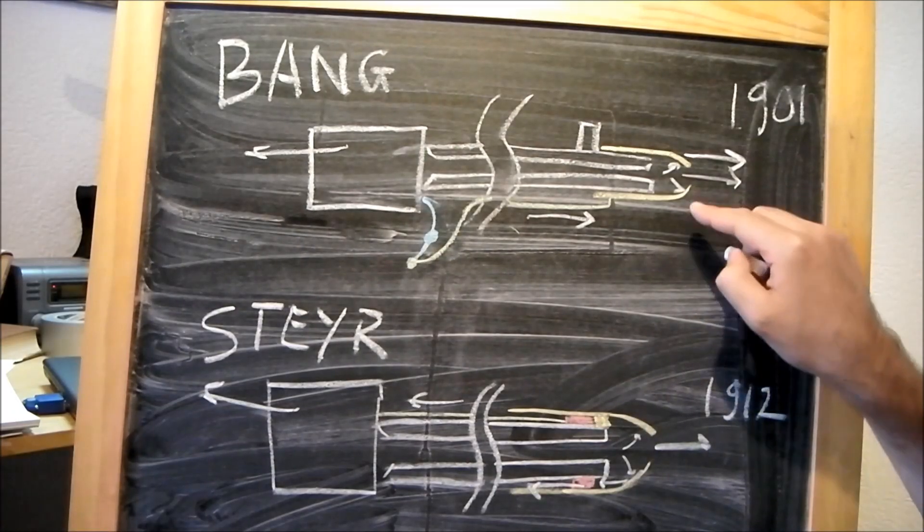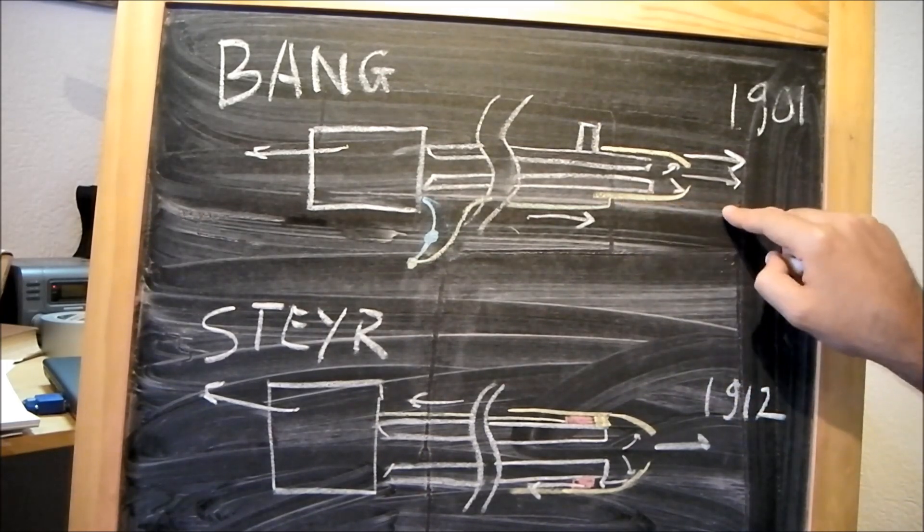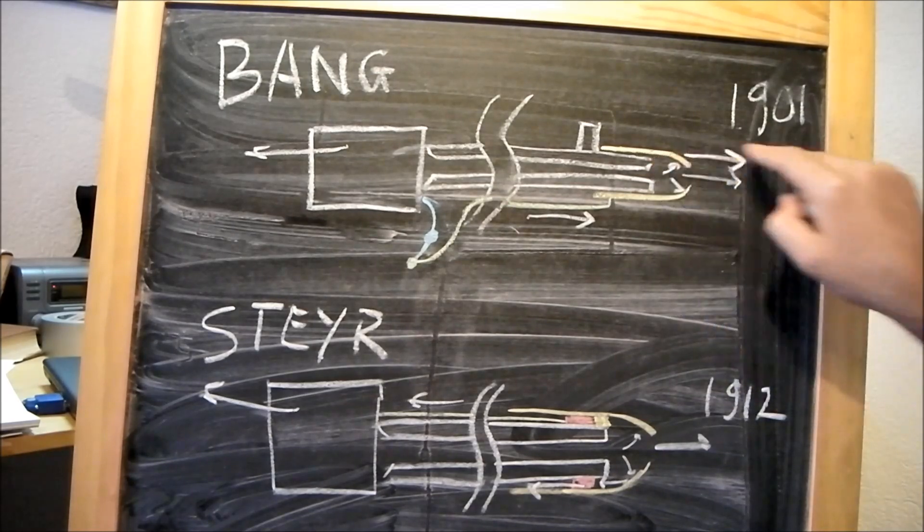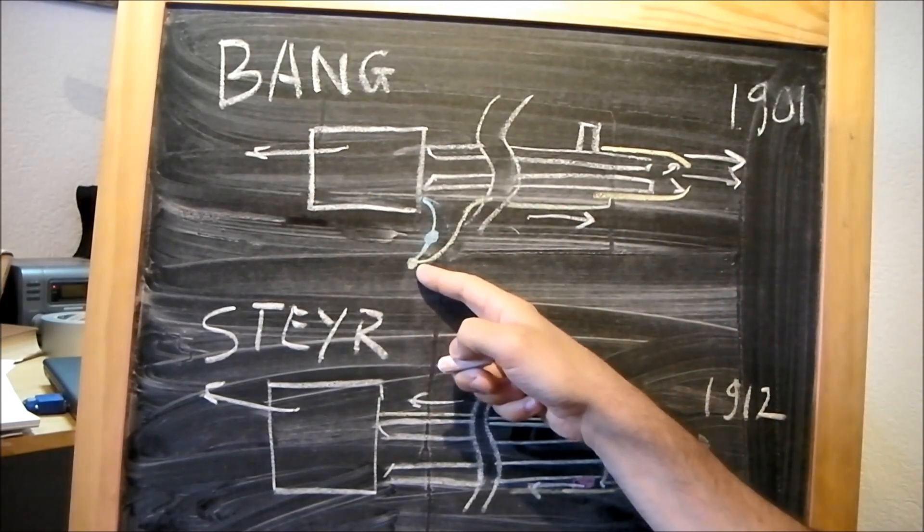So to recap, in the Bang system, the sleeve that forms the gas trap at the muzzle is sliding and goes forwards. This motion is turned into a rearwards movement by a lever back here.